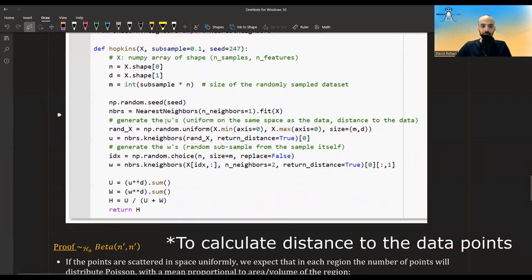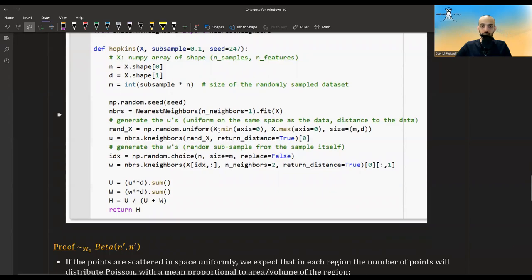Then I generate the U's. So I draw uniformly from the hypercube that is stretched from the minimal X, so the X that has the least points, and the maximal X. So maybe not hypercube, hyper-rectangle. We create this box from the minimal point and the maximal point, and we draw samples from there. And then I calculate their distance to the closest neighbor in the data.